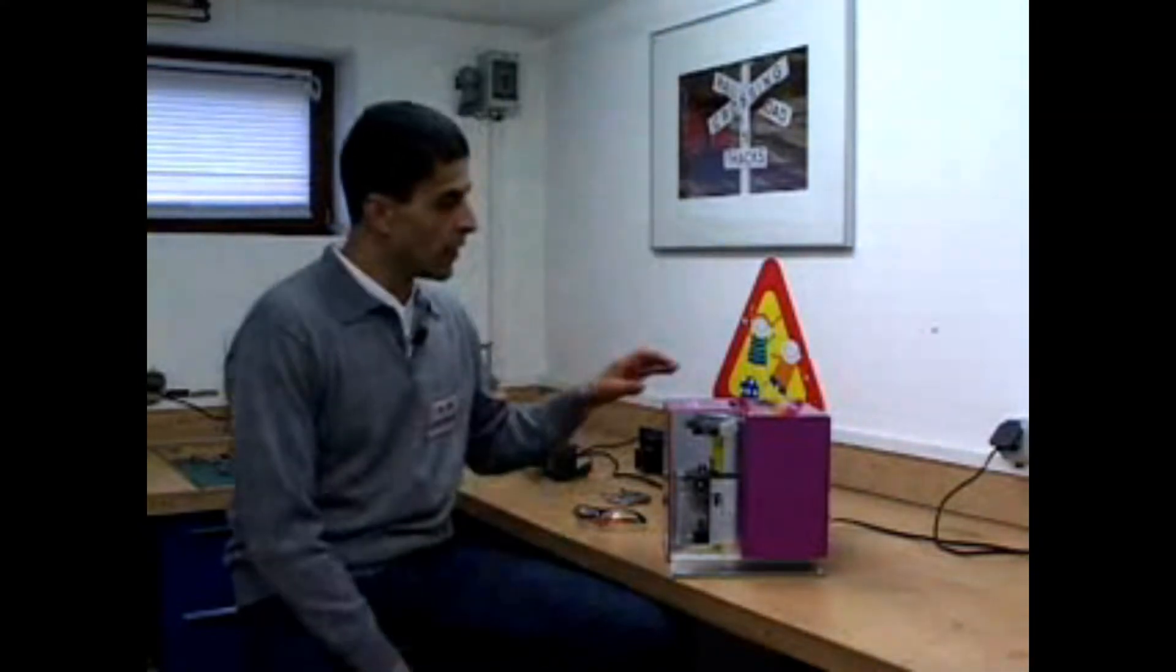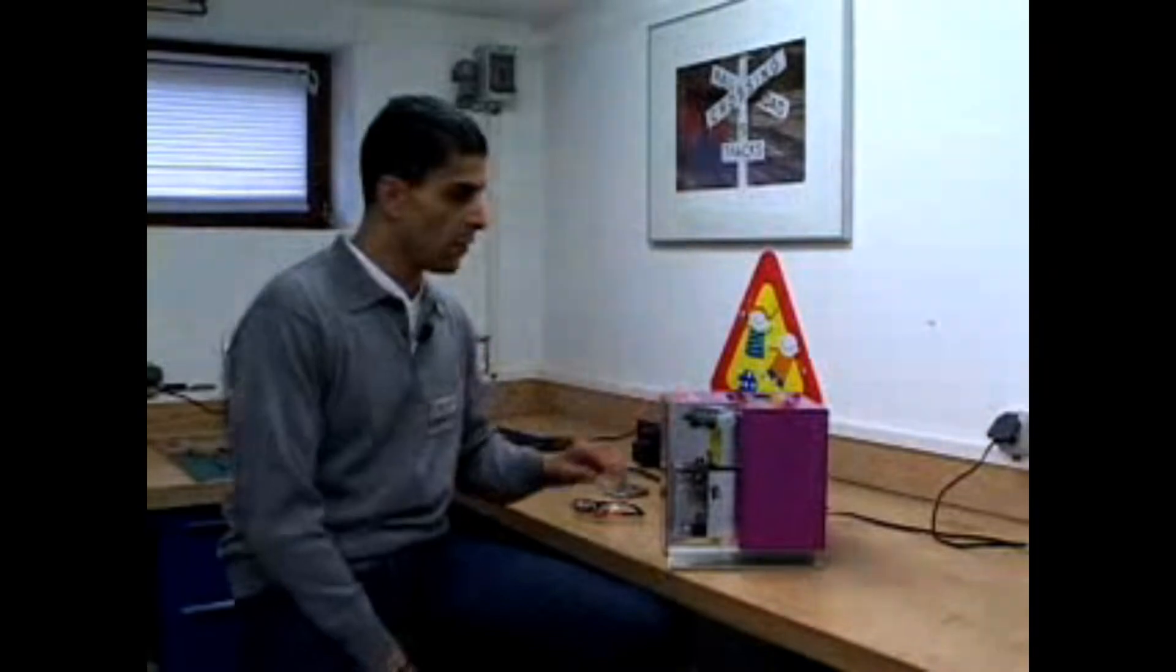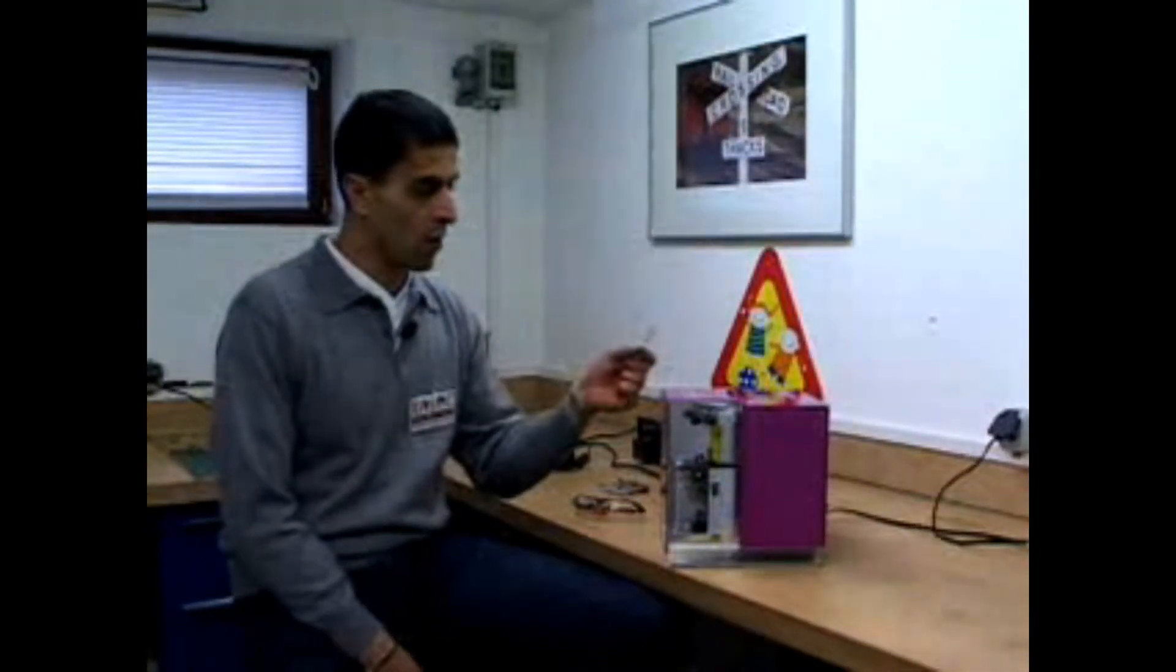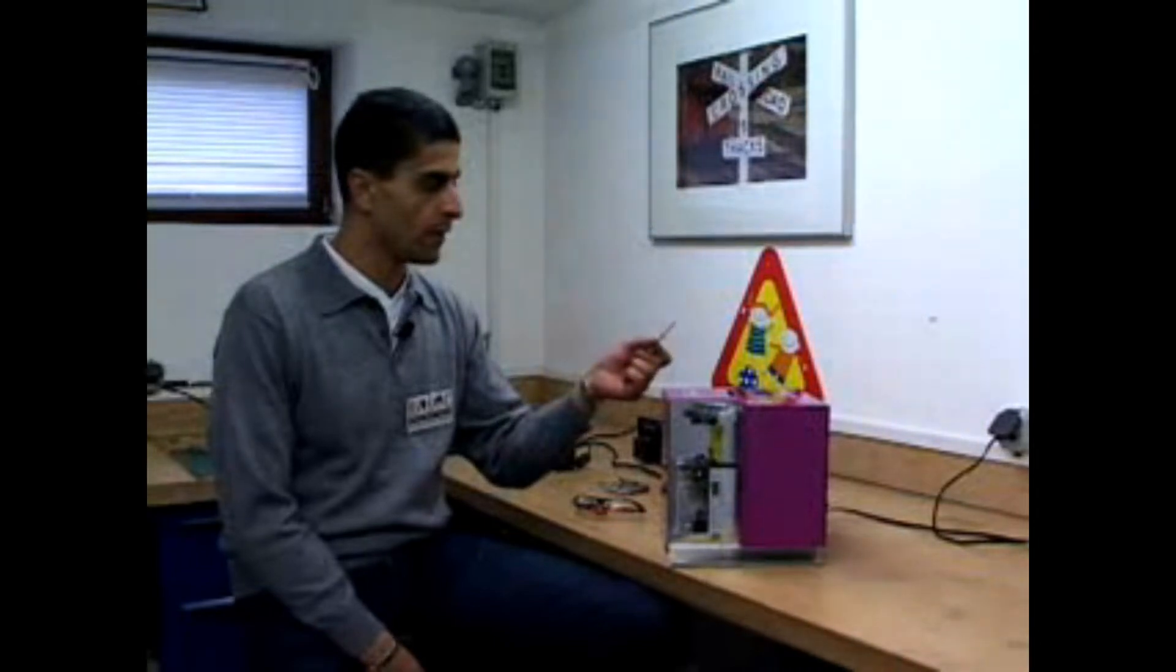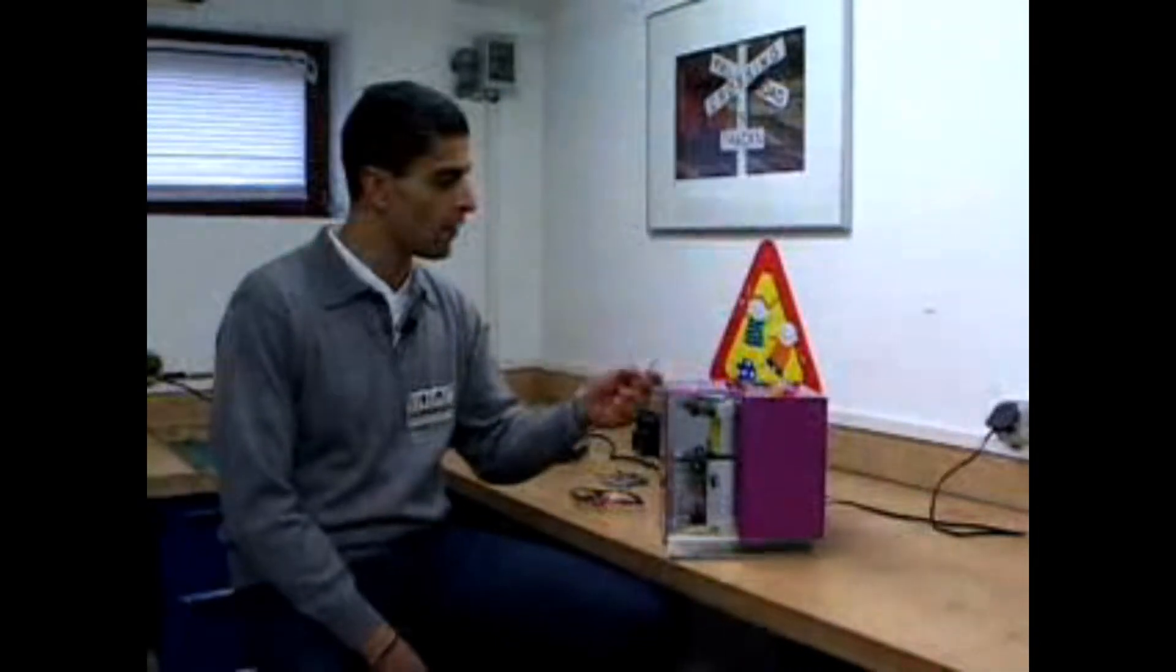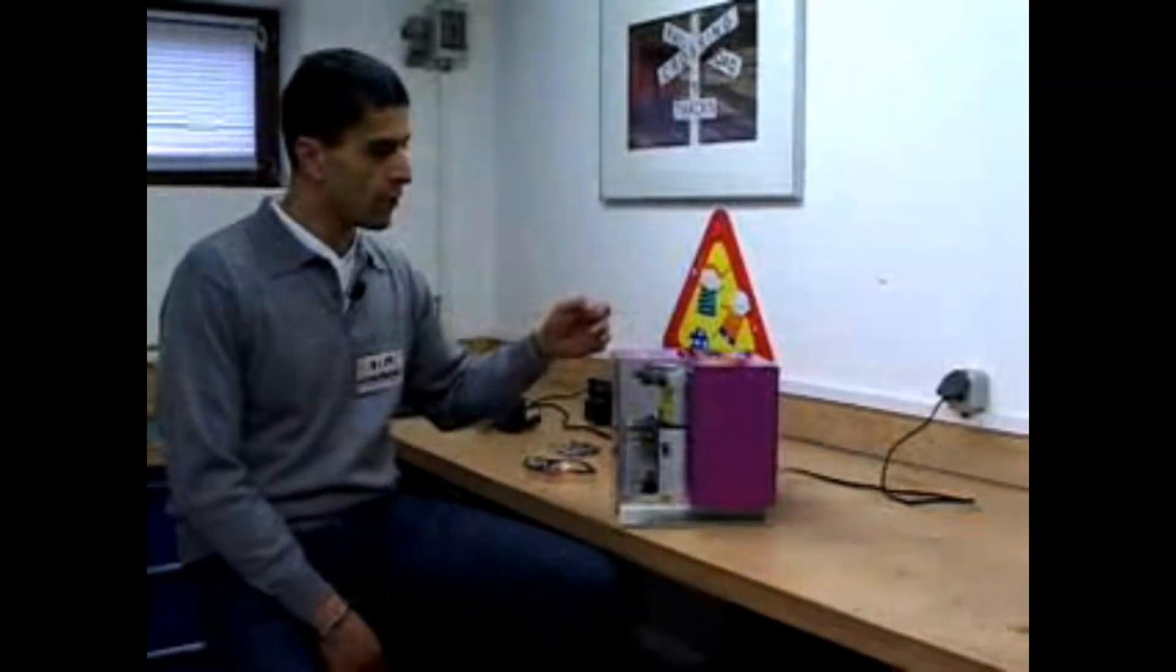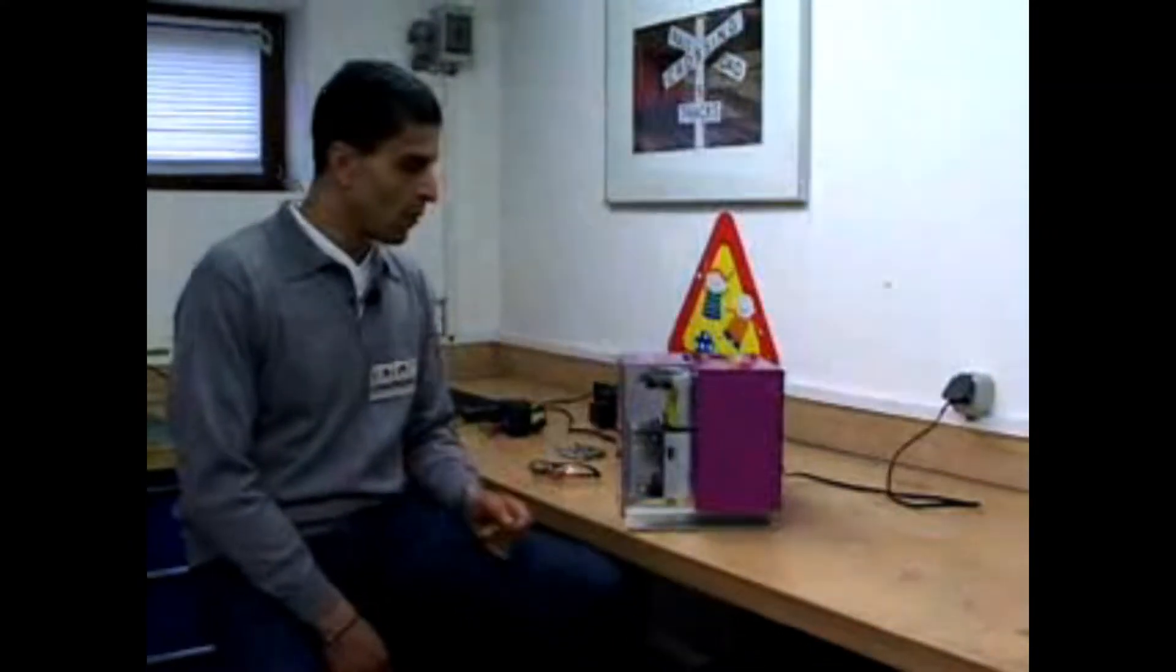It has a reading system where you can take a normal key. This is a protected key from the company SAIS Econ. You put it here and it reads the key, then makes the key on special key blanks.